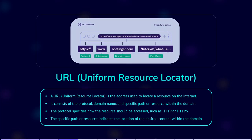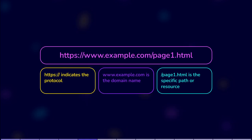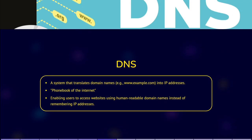URL — Uniform Resource Locator. A URL is the address used to locate a resource on the internet. Take a look at this example to understand the different parts of a URL. DNS is a system that translates domain names into IP addresses. It acts as a phone book of the internet, enabling users to access websites using human-readable domain names instead of remembering IP addresses. When you enter a domain name in a web browser, DNS resolves or translates it to the corresponding IP address, allowing your browser to establish a connection with the web server.